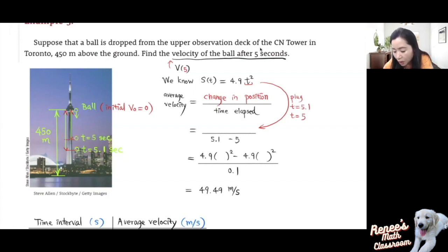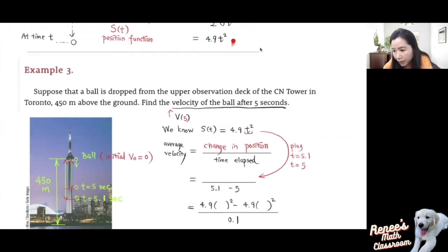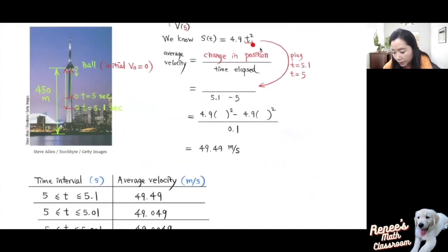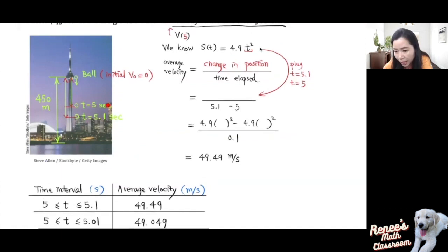How do we find the instantaneous velocity of the ball after 5 seconds? We'll denote it v at 5 seconds. Since the ball is dropped from rest, the initial velocity is zero, so the position function is s(t) = 4.9 t squared, according to Galileo's law. To find the instantaneous velocity at this moment, we can calculate an average velocity near this moment — for example, over the time interval from 5 seconds to 5.1 seconds — and use that average velocity as an approximation to the instantaneous velocity right at 5 seconds.